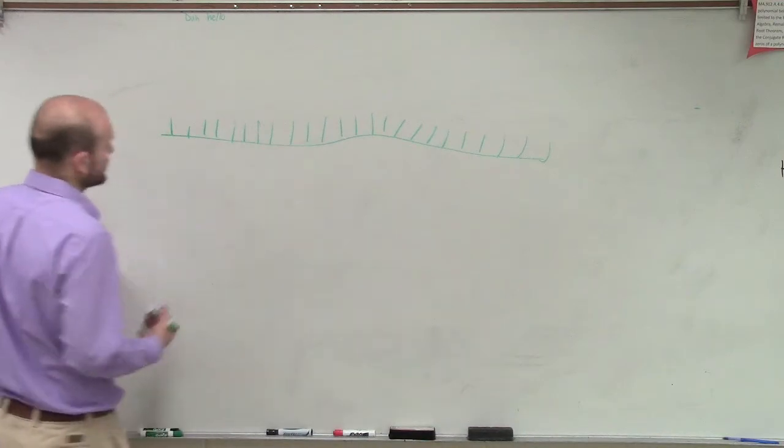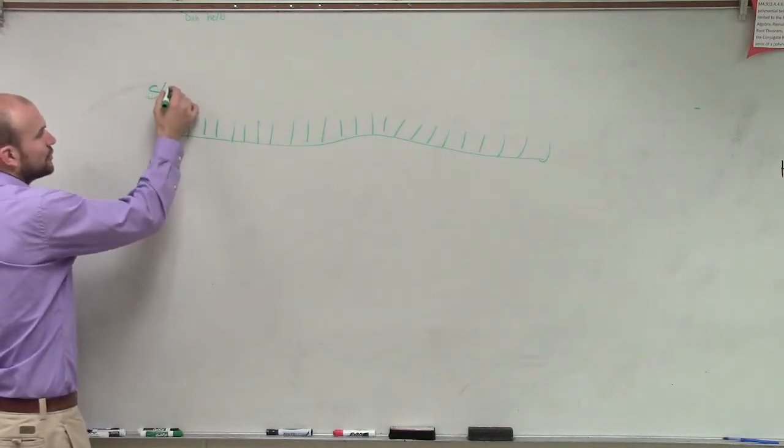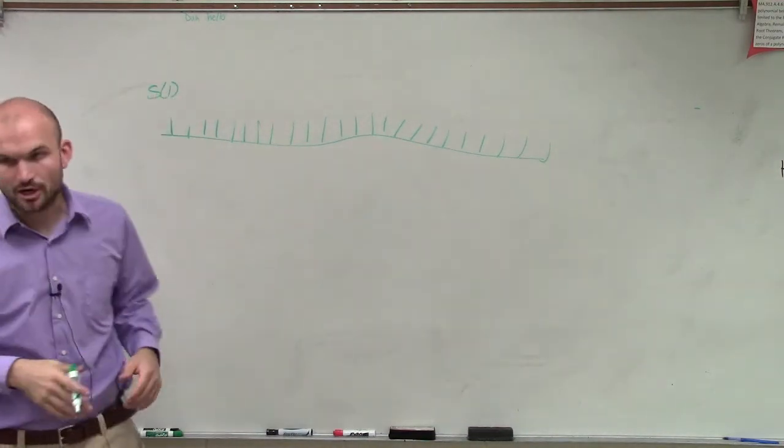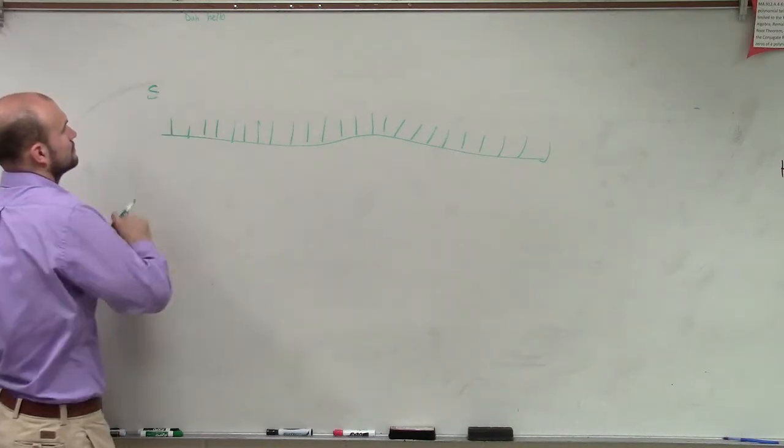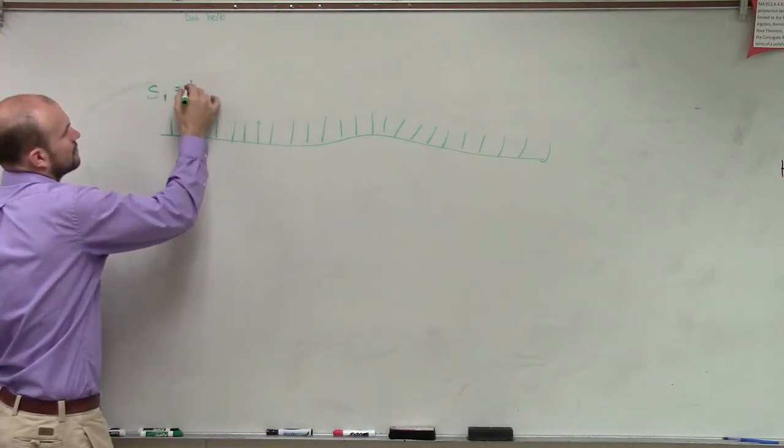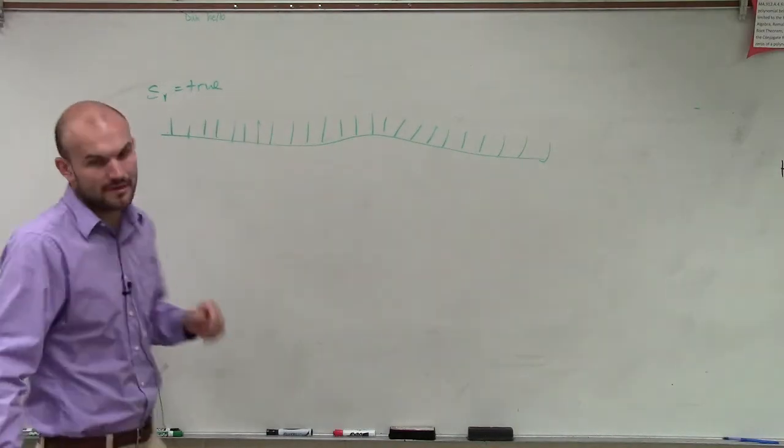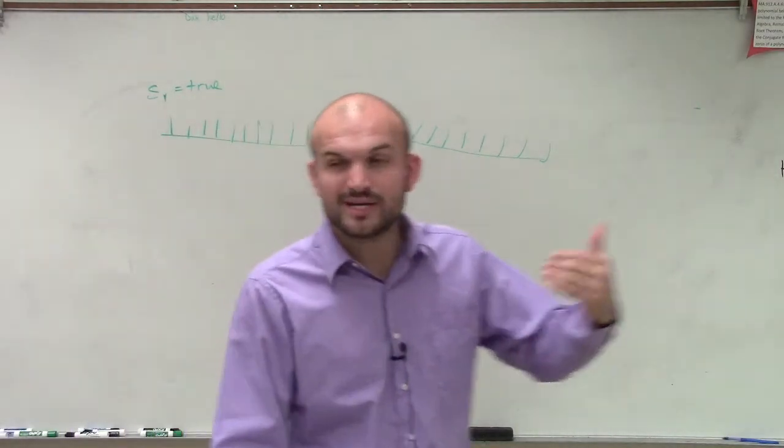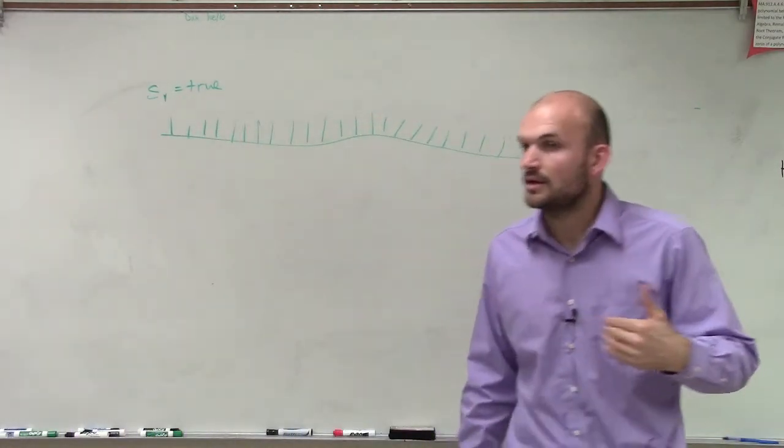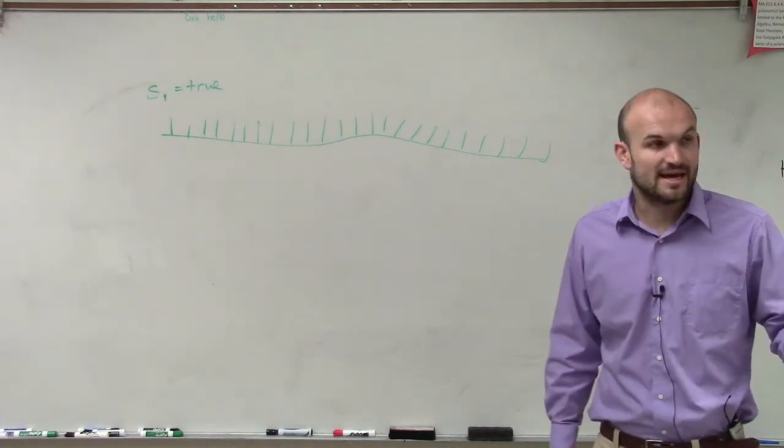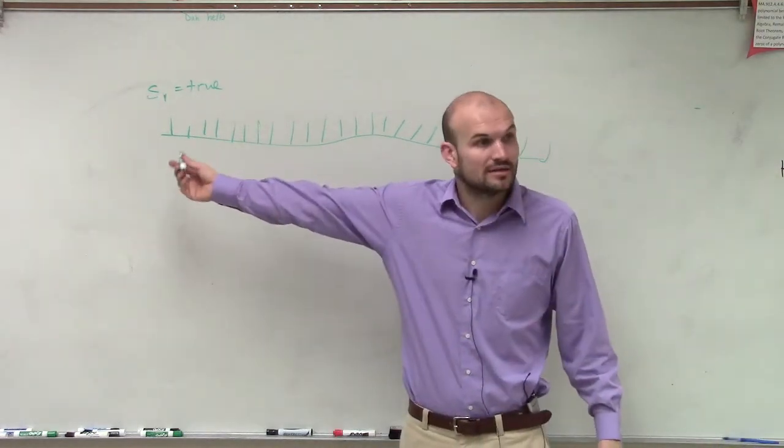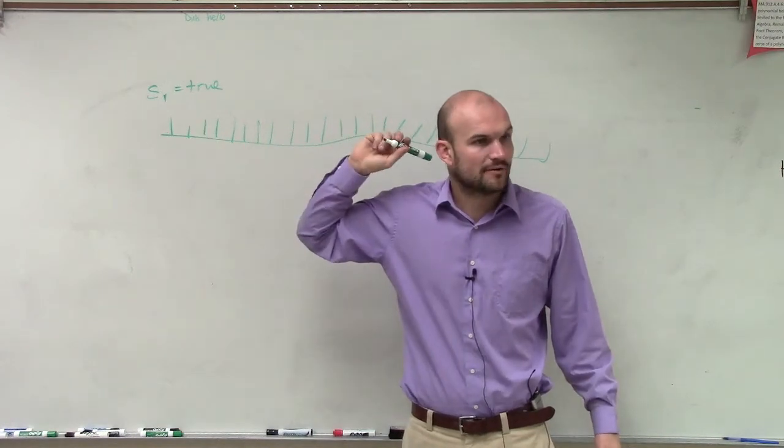So the first thing that we're going to look at is we need to prove that that first domino is going to fall. We're going to show that we can prove the first domino is going to fall, because obviously, if the first domino can't fall, it's going to be difficult to prove that the rest of the dominoes are going to fall down.